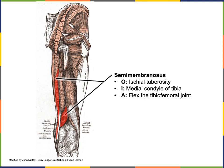Semimembranosus is located deep to semitendinosus. It also has an origin from the ischial tuberosity, and insertion on the medial condyle of the tibia, to perform the action of flexion of the tibiofemoral joint.